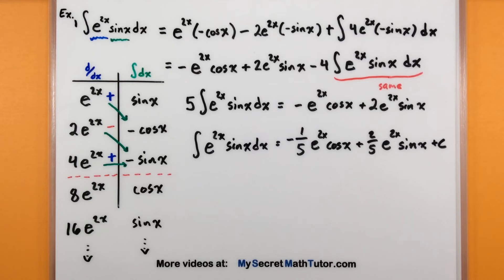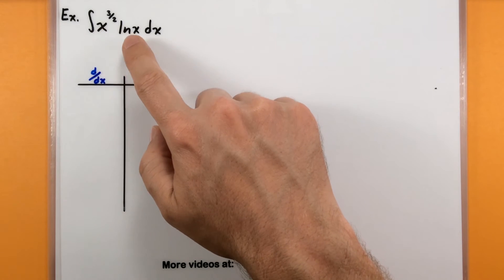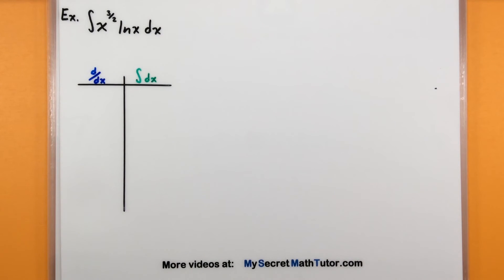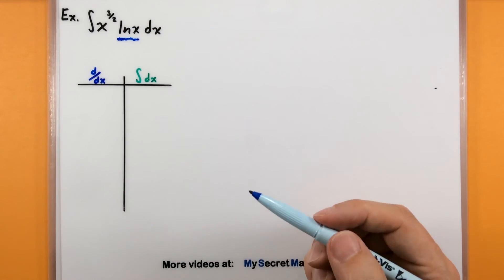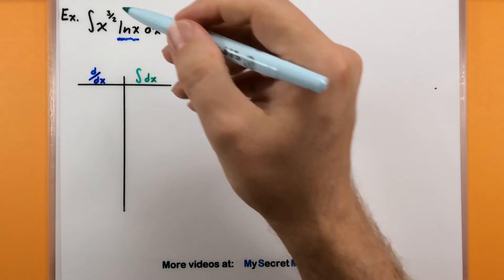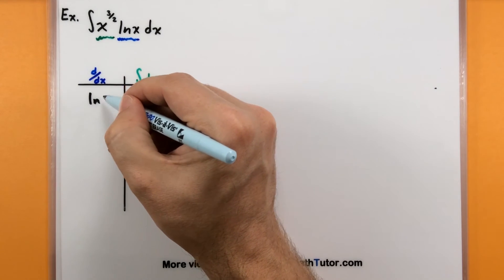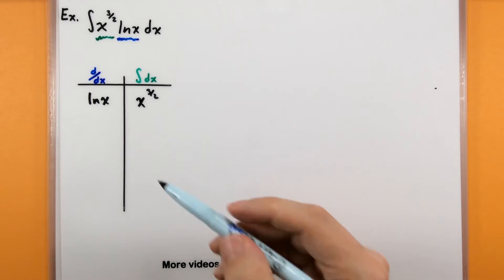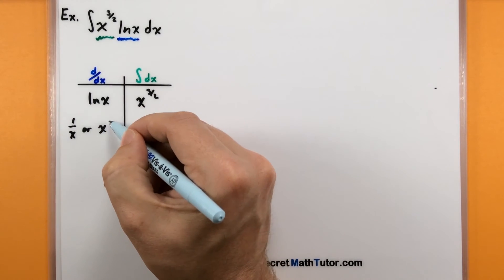Just one last example to show you that you can use this for any problem that uses integration by parts. This one involves x to the 3 halves multiplied by natural log of x. None of these really cancel out or go to zero, and none cycle back like trigonometric functions, so we're going to have to stop the process early. It's nicest to take derivatives of natural log because its derivative is just 1 over x, and we'll take anti-derivatives of x to the 3 halves.